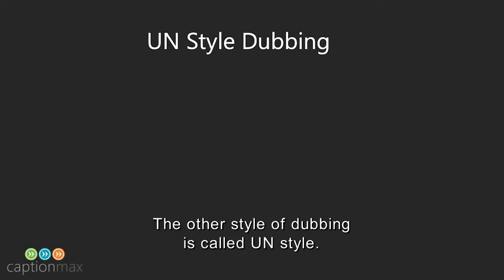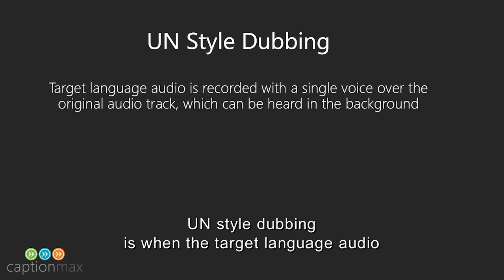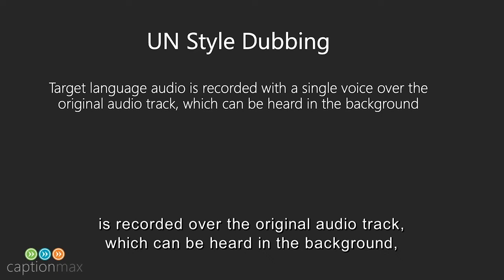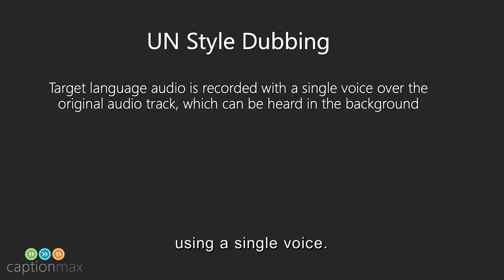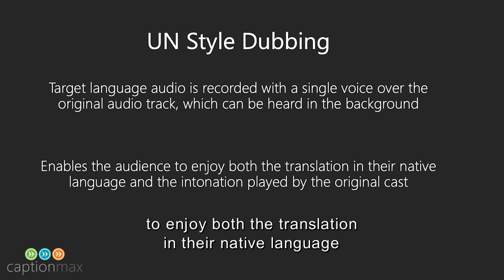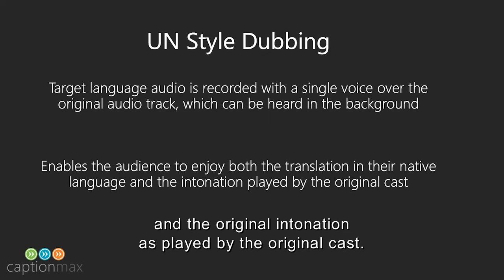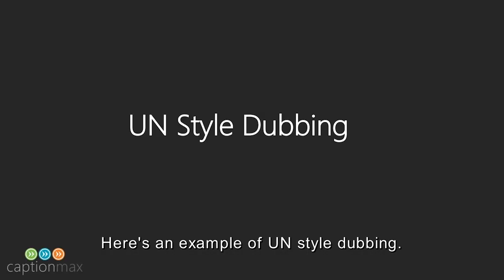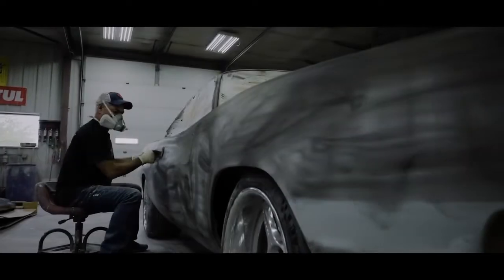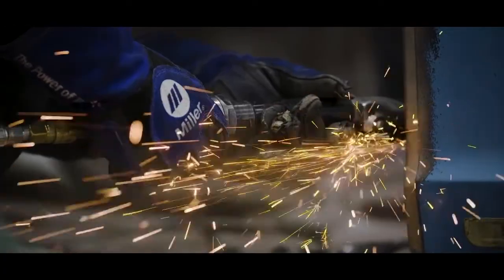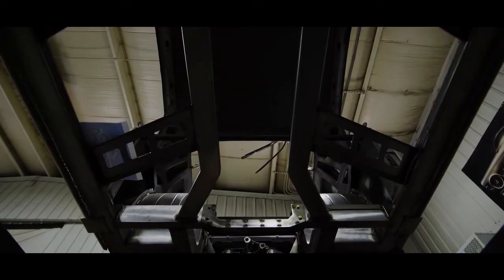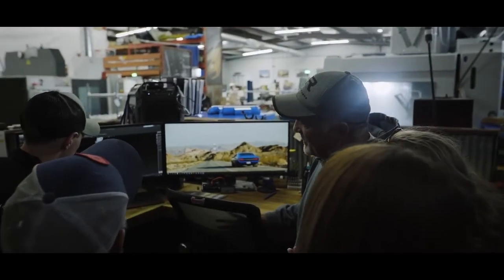The other style of dubbing is called UN style. UN style dubbing is when the target language audio is recorded over the original audio track, which can be heard in the background using a single voice. The goal is to enable the audience to enjoy both the translation in their native language and the original intonation as played by the original cast. Here's an example of UN style dubbing. The clip of the automotive designer plays without subtitles. No me apego con lo que la gente espera. Y aún así, siempre quedan satisfechos. Soy un hechicero, un conjurador, y un alquimista que diseña autos.